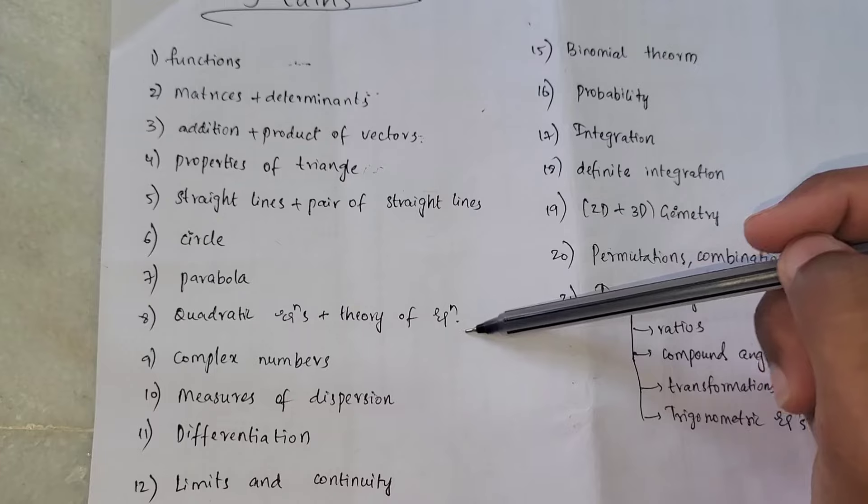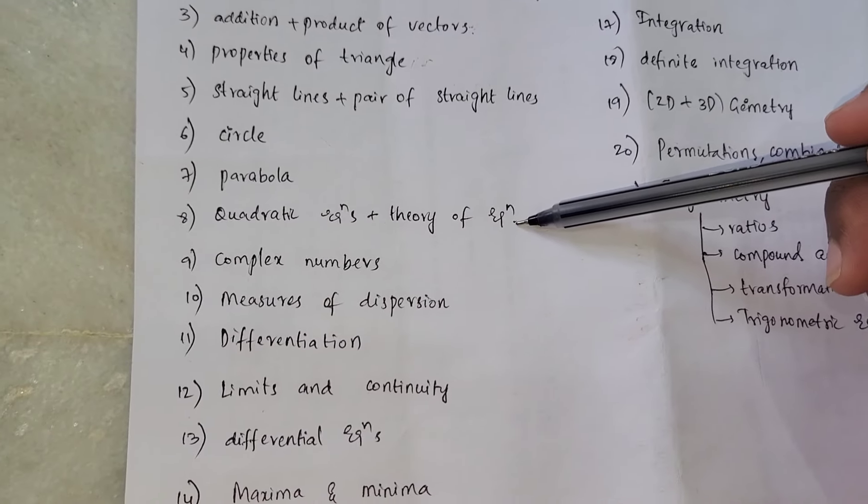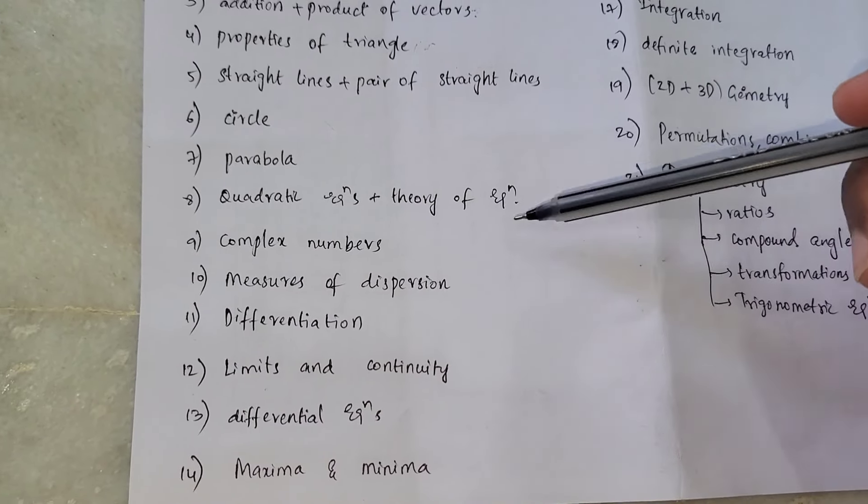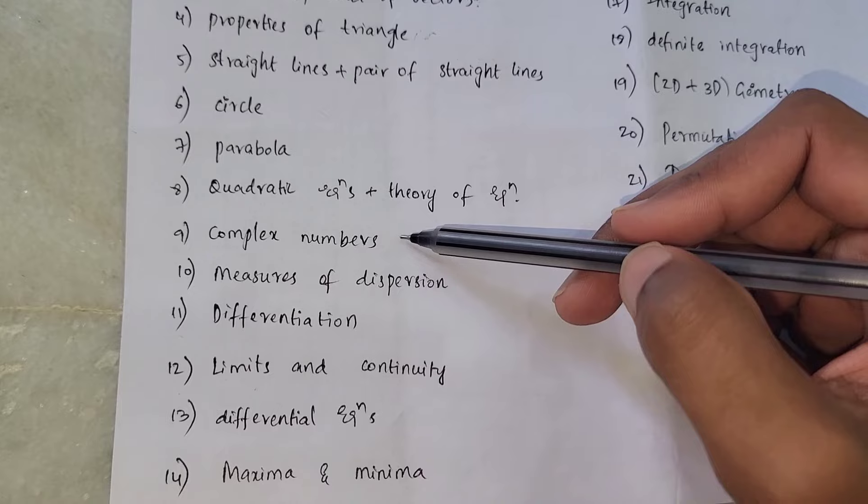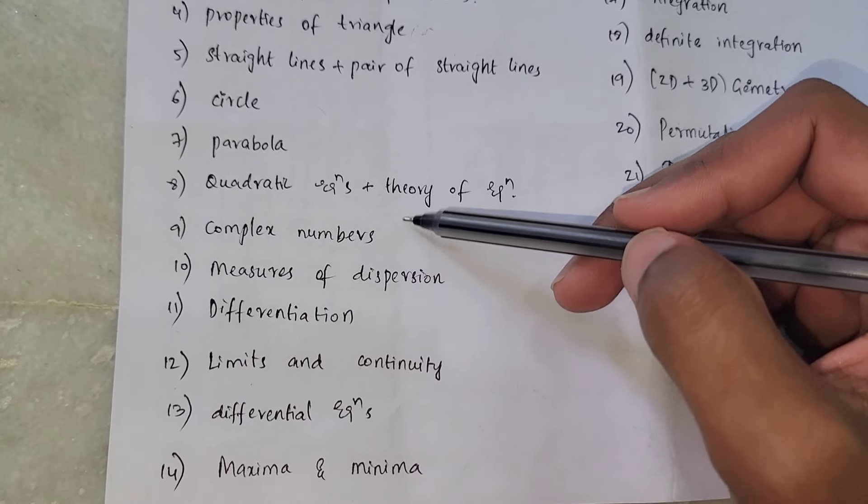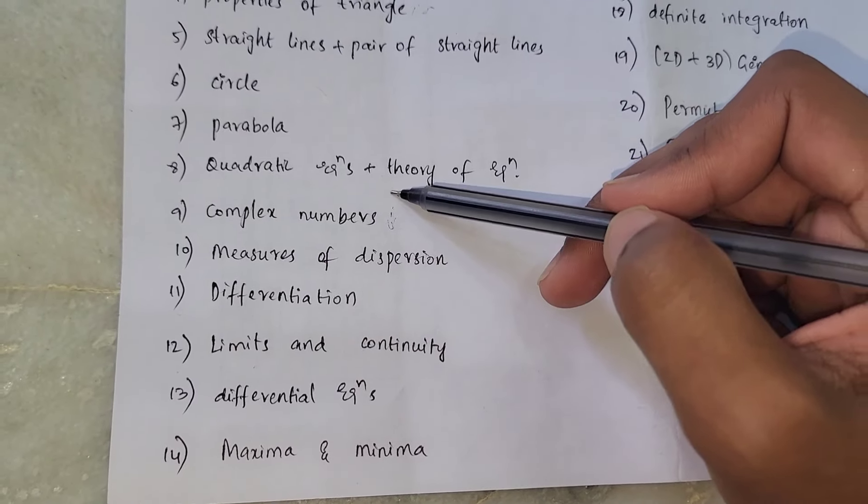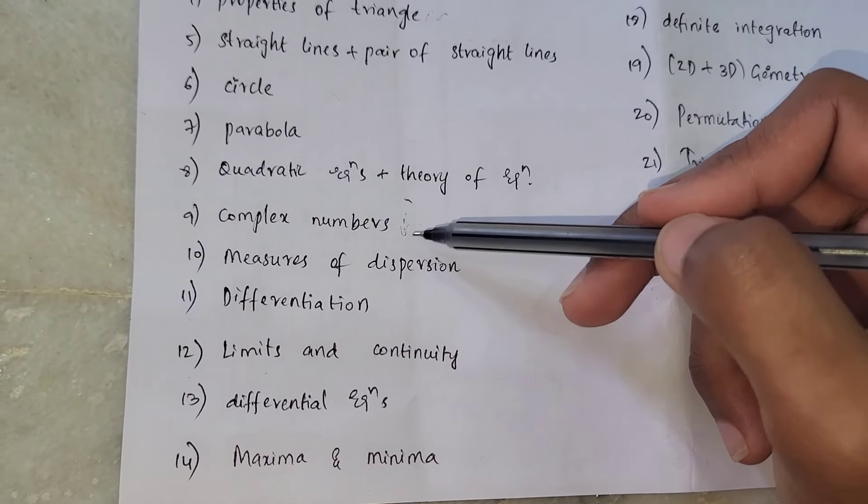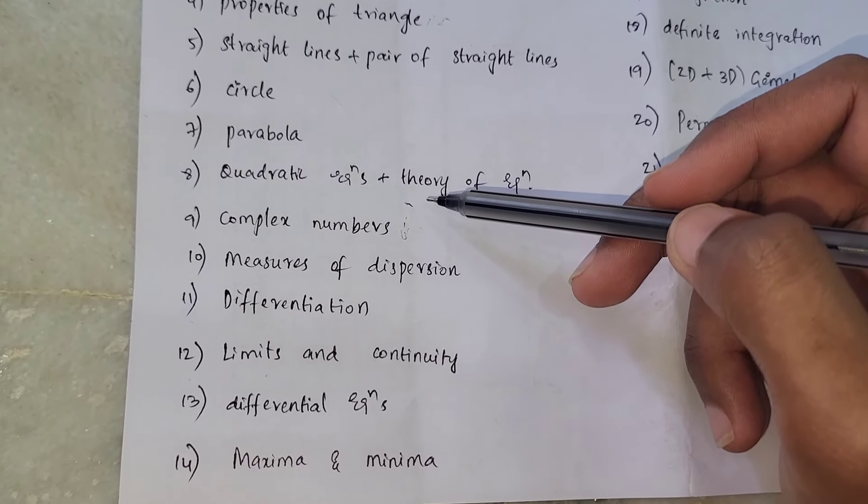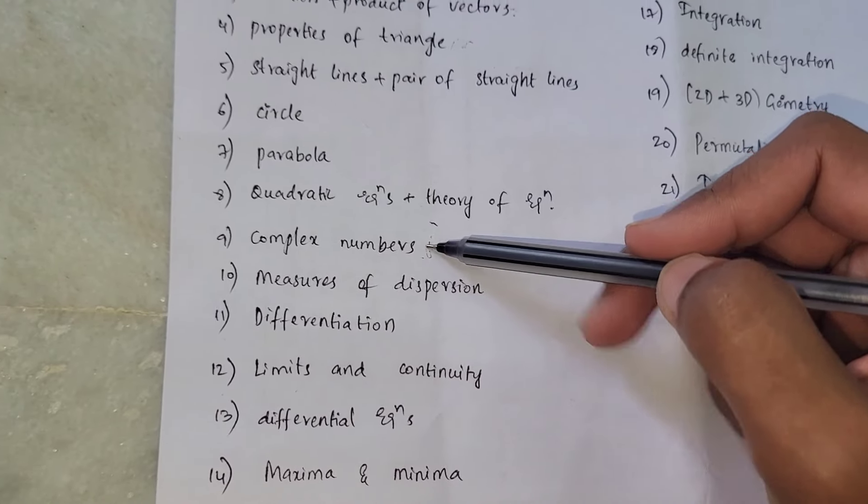Next, I have quadratic equations and theory of equations. This has easy questions. Do a few practices, don't neglect this chapter. Next, complex numbers. This is a little easier, but you'll have to answer some advanced questions. But you can do the basic questions - the values of i, i squared, i cubed, i to the power 4. This is easier.